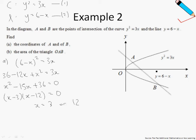So since B is further off to the right than A, I conclude that the x-coordinate of B must be 12, whereas the x-coordinate for A must be 3.